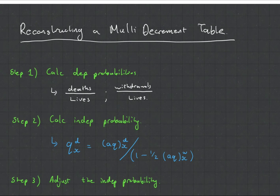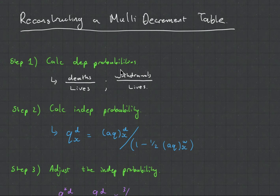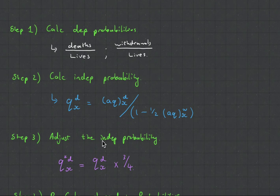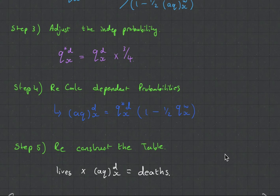Okay so constructing a multiple decrement table after a change has been made there are five steps and the first step is to calculate your dependent probabilities then you use your dependent probabilities to calculate your independent probabilities. So this relationship here is very important. Then step three is quite easy. You adjust your independent probability. In this case we've made it 75 percent of its original value. We then recalculate the dependent probabilities. This is another formula that's very important to know and then you reconstruct the table.